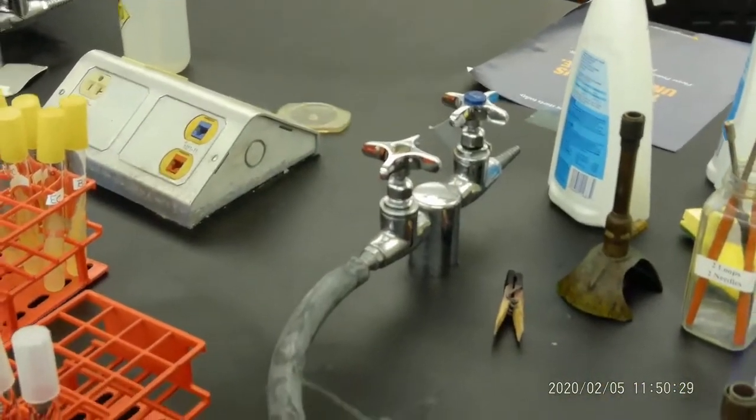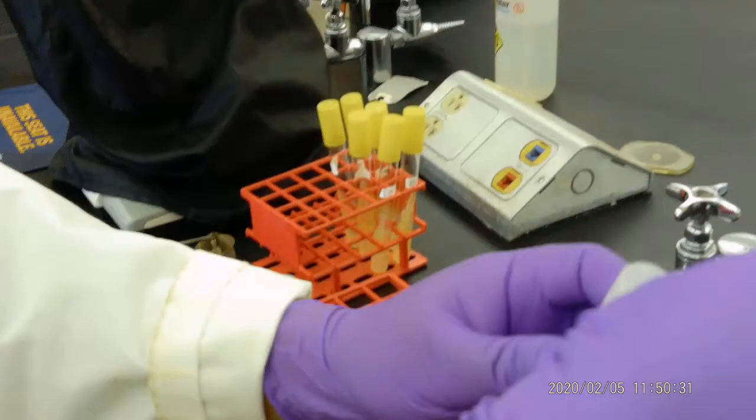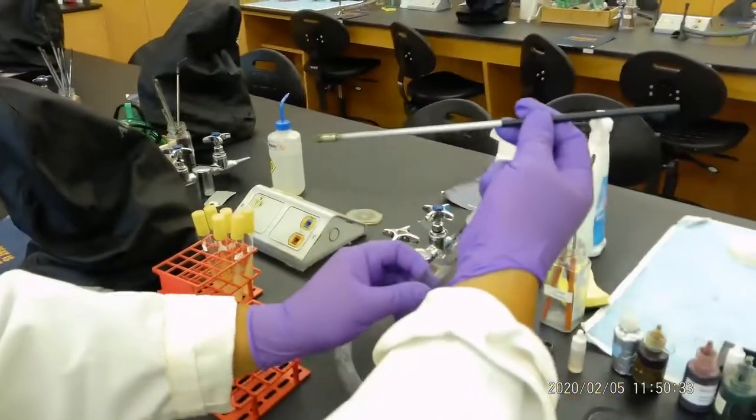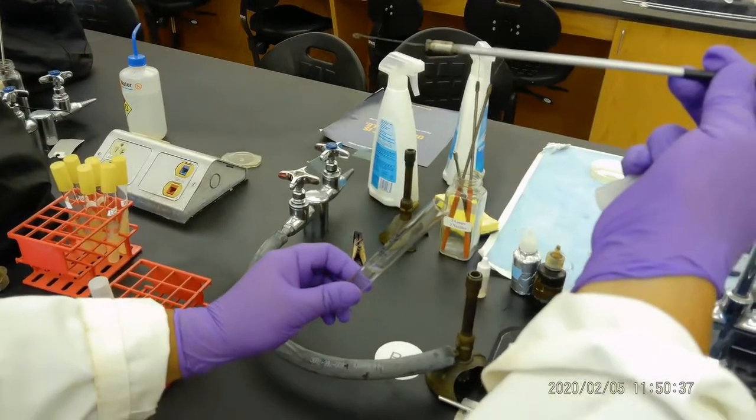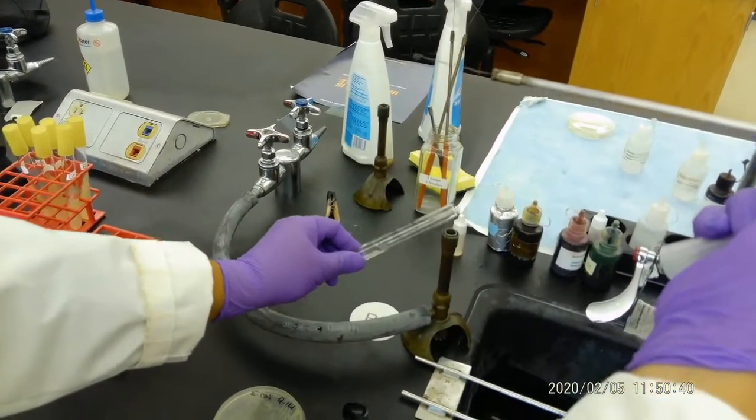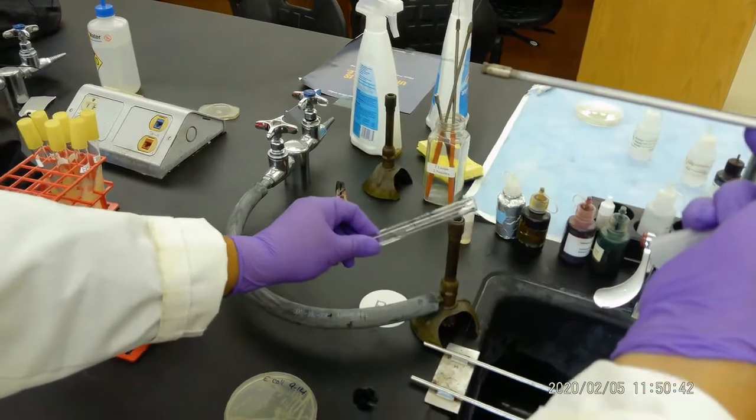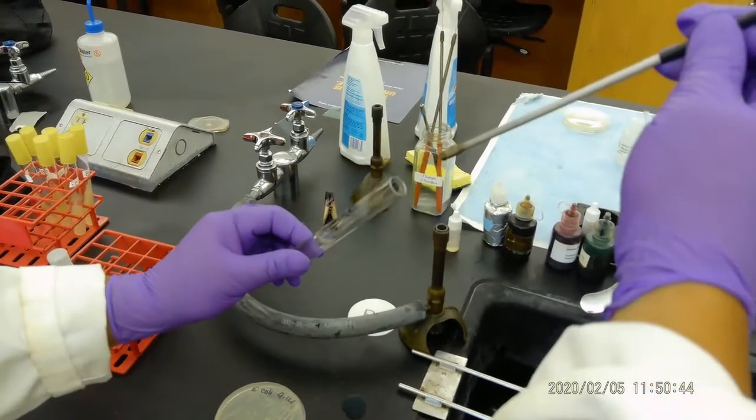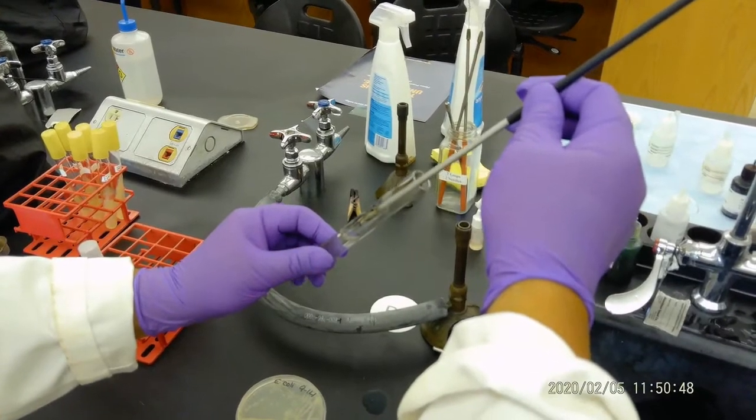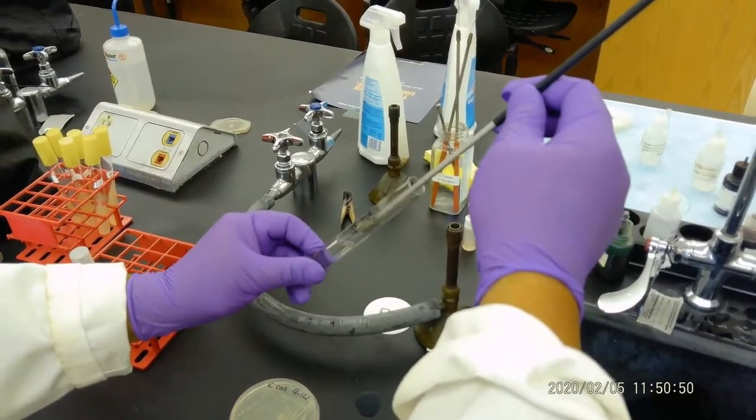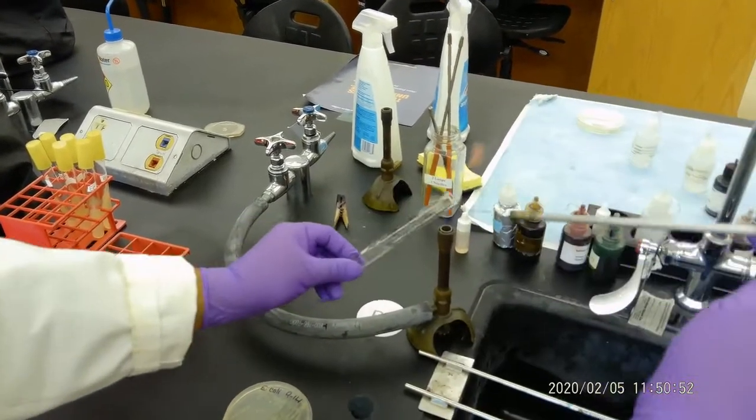For the broth, it's very simple. Little finger is holding it, take out the cap, then you flame to make sure it's decontaminated. Then you go inside just like that a couple of times. Then you flame it and close it, put it on the side.